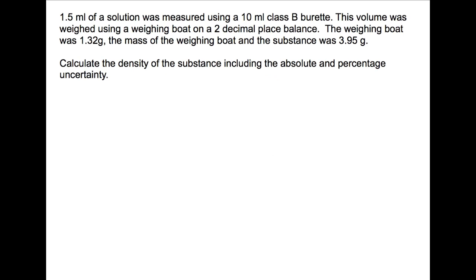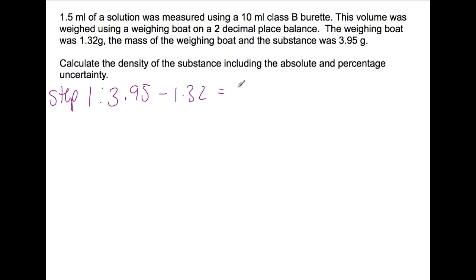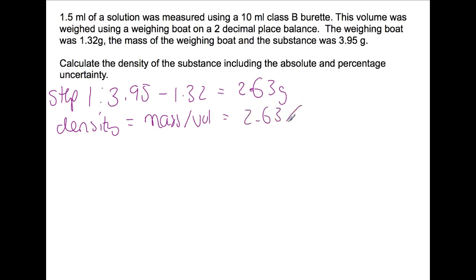Within this calculation we have both a subtraction calculation and multiplication/division calculations, so we have a few different error calculations. First, calculate the density: the mass is found by difference — 3.95 grams (substance plus weighing boat) minus 1.32 grams (weighing boat) gives a mass of 2.63 grams. Density is mass divided by volume, so 2.63 divided by 1.5 gives 1.75 grams per cm³.